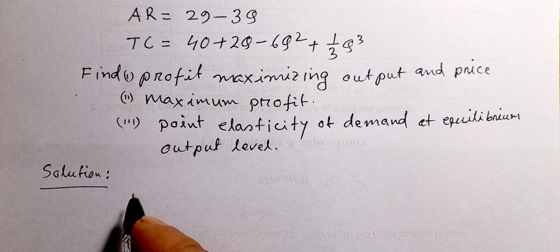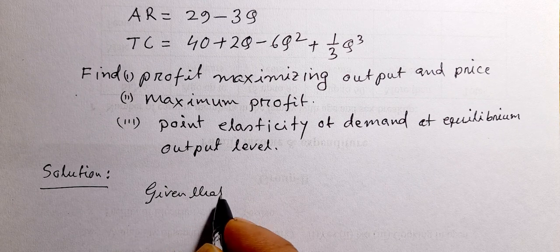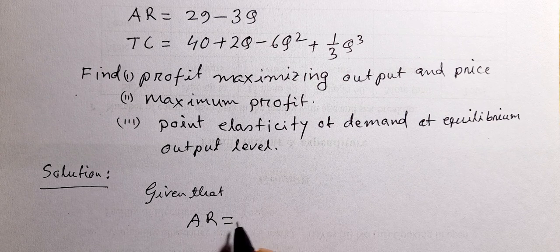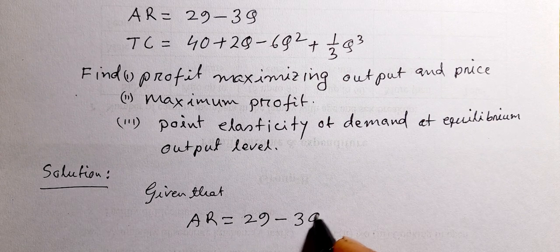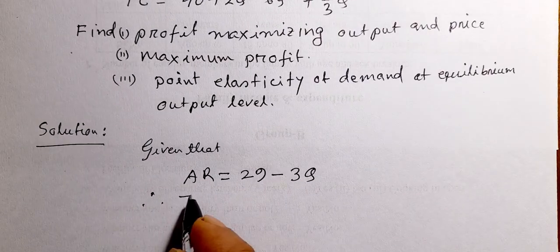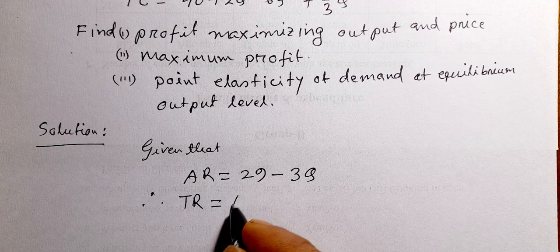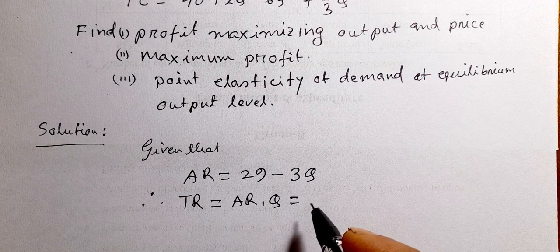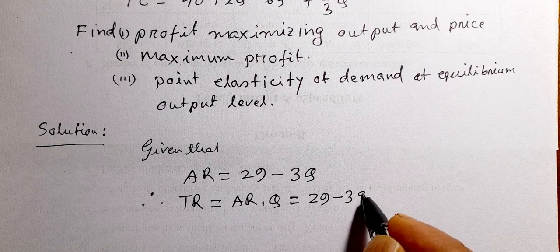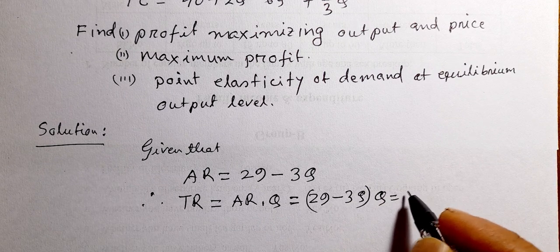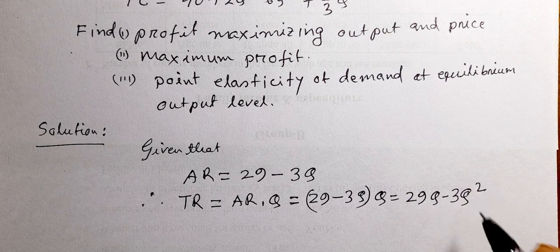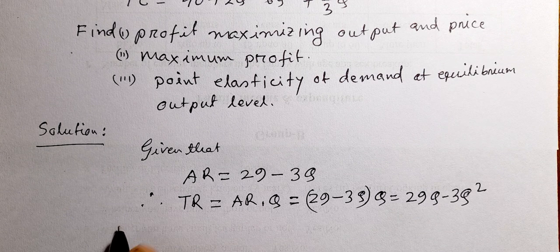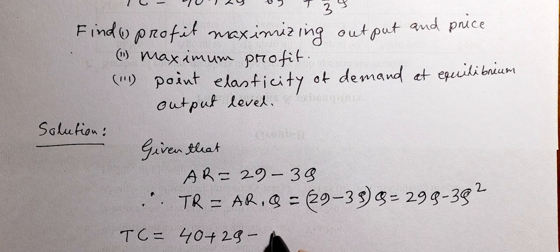Solution: given that average revenue equals 29 minus 3q. Therefore, total revenue will be AR multiplied by q. That gives us TR equal to 29q minus 2q² — that is the total revenue. We are given that total cost TC is equal to 40 plus 2q minus 6q² plus (1/3)q³.